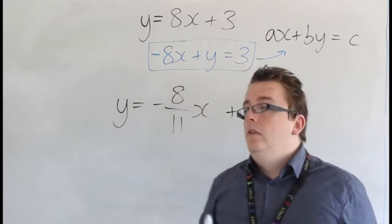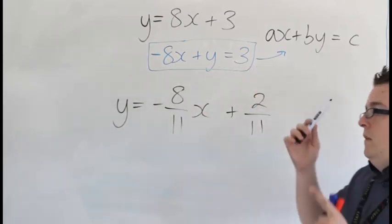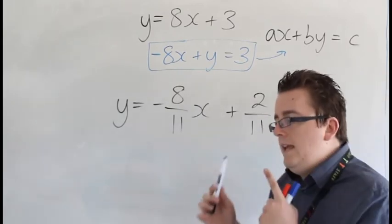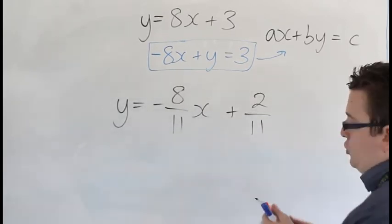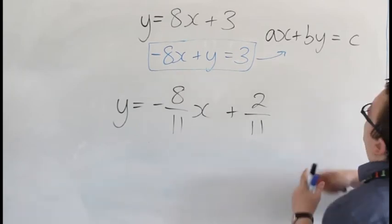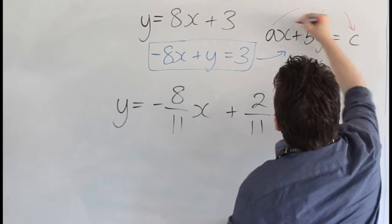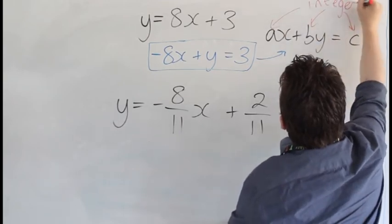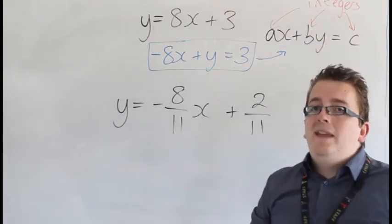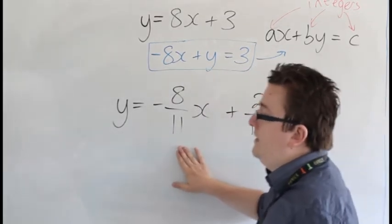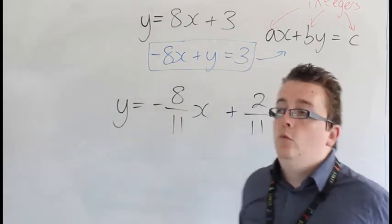Now, the best way to do that is, well, before I say the best way to do that, the key information here is that usually what we want is that a, b, and c are all integers. So we want them to be integers, so we can't have fractions. Otherwise, you could just add 8/11 x to both sides, and there, we've got it.